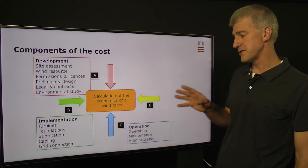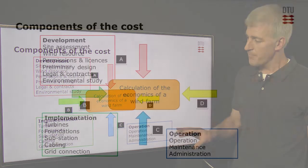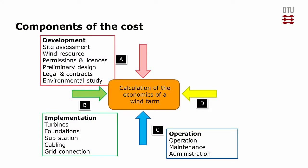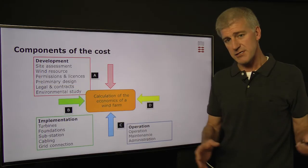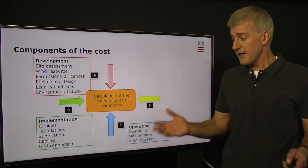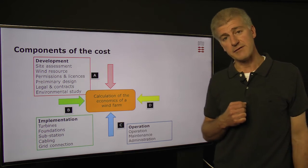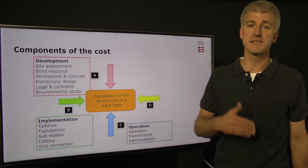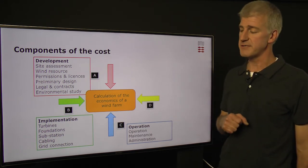Then we move on to the implementation and operation itself. The implementation is where we actually construct the wind farm, and we need to buy and put in the turbines. We need to make the foundations, substations and cabling. And at last, of course, we need to actually make the grid connection in order to be able to sell our electricity on into the grid.